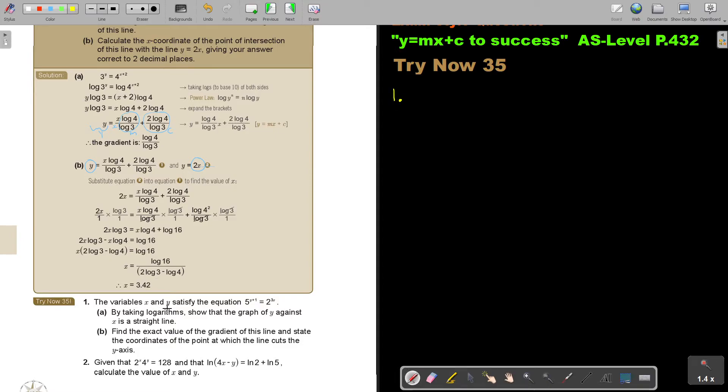Number 1. The variables x and y satisfy the equation. 5, so it's y plus 1, equals 2 to the power of 3x.